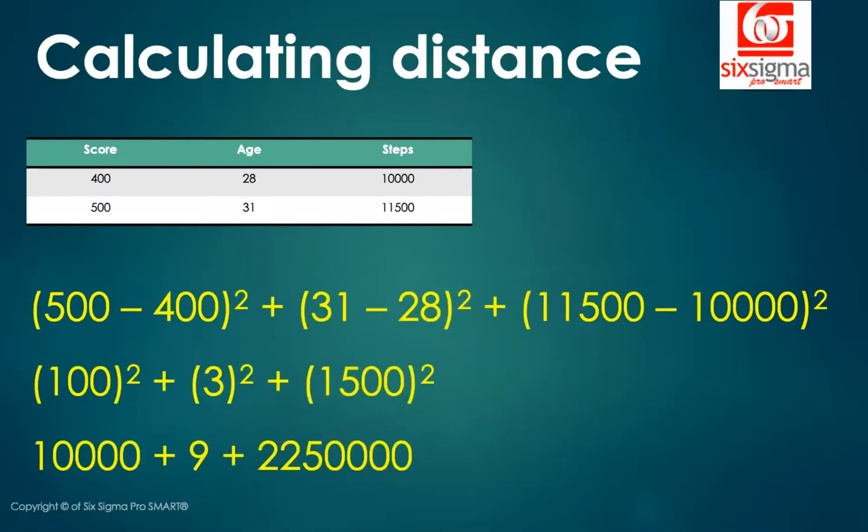So now you see that the variable which has its scale in thousands is the most dominating variable here. When I look at the distance at the end of this calculation, this is going to be the most dominating variable. Why? Because if you look at the order, it is almost 2.25 million. Compared to that, a nine attributed by age and a 10,000 that's attributed by score is barely going to matter. So in such cases, when your variables are on different scales, the one with higher magnitude will often dominate in most of the calculations.